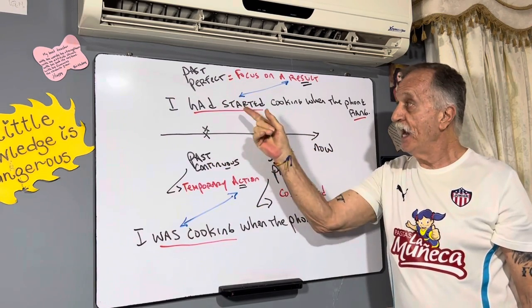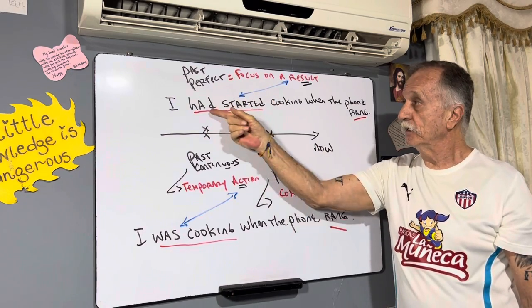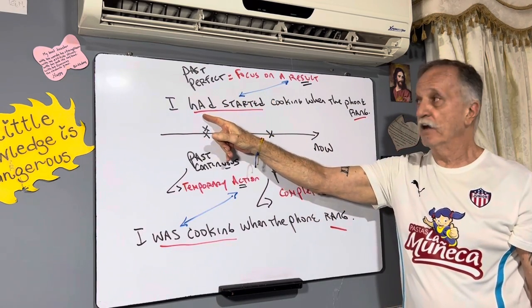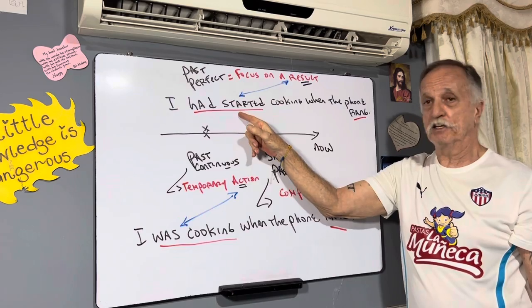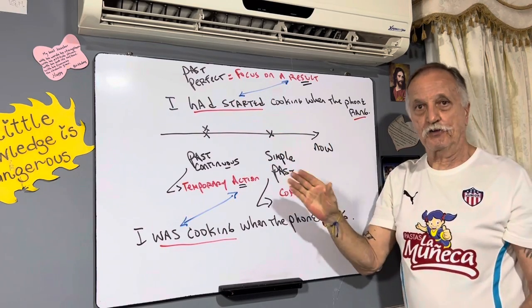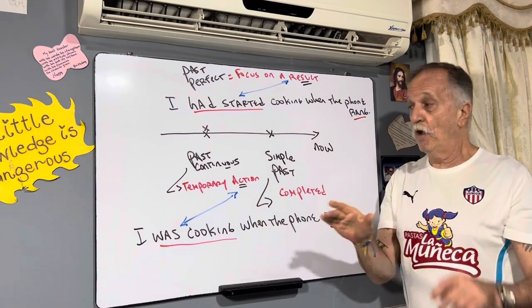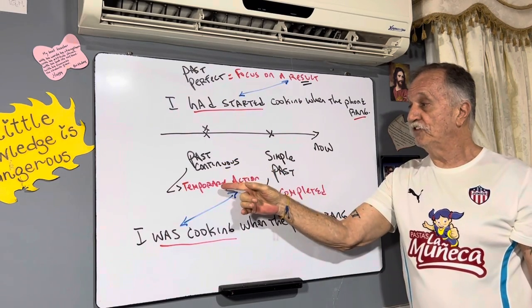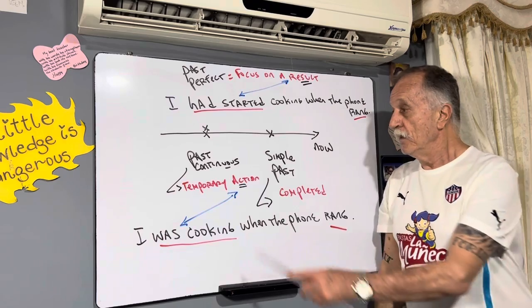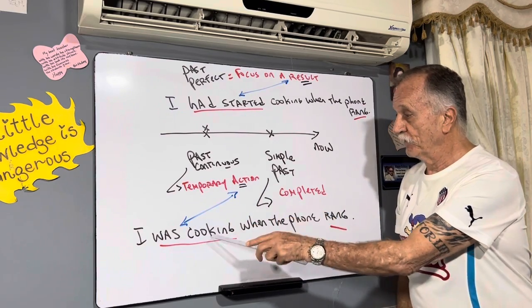I had started cooking. 'Had started' — verb 'to have' with a participle. It's the focus on the result; I started it. But we also have past continuous: 'I was cooking.' That focus is on the action of cooking.